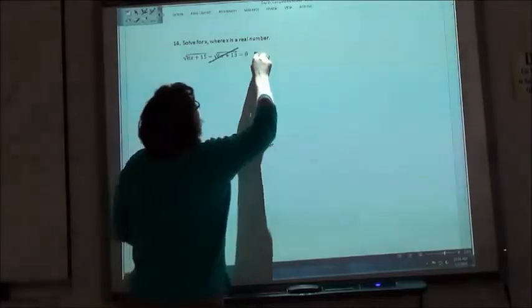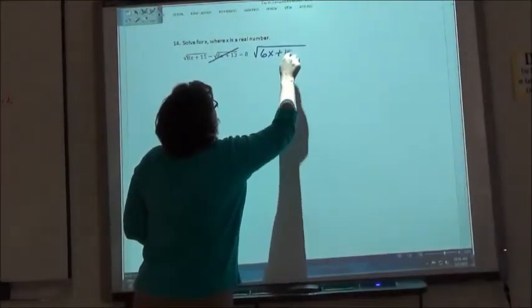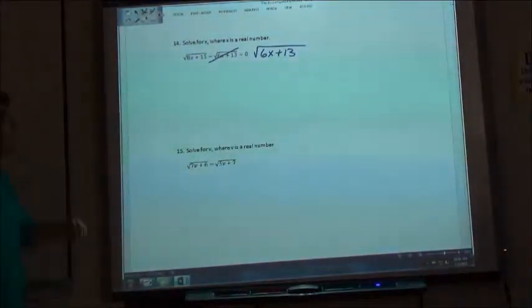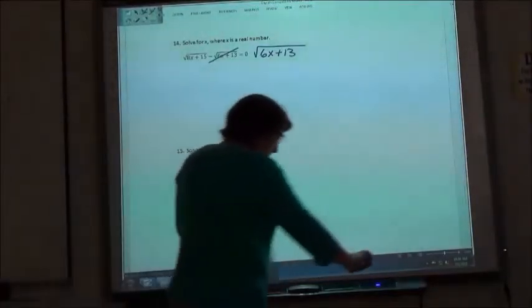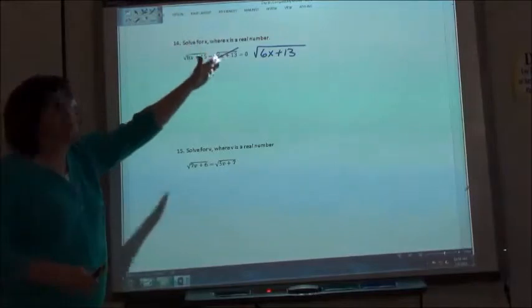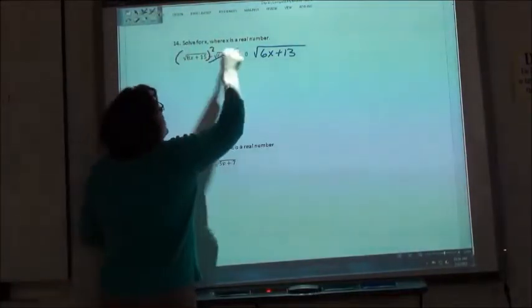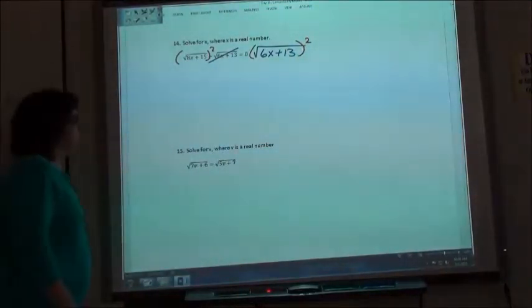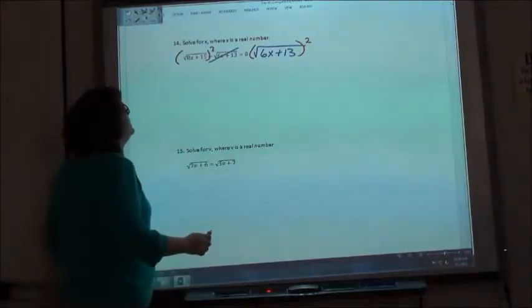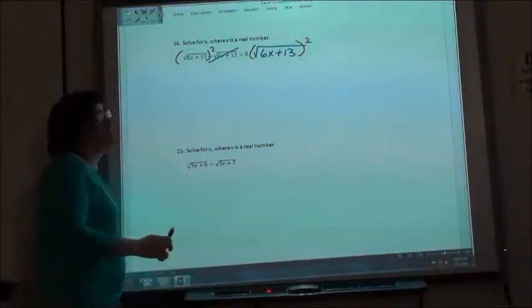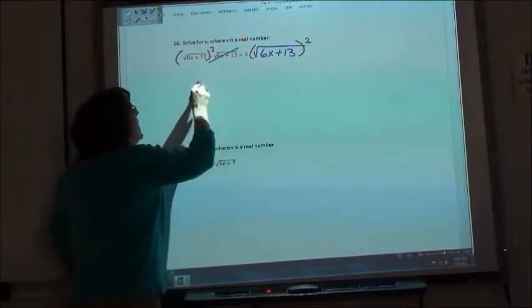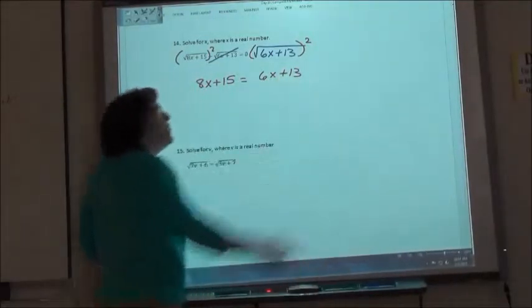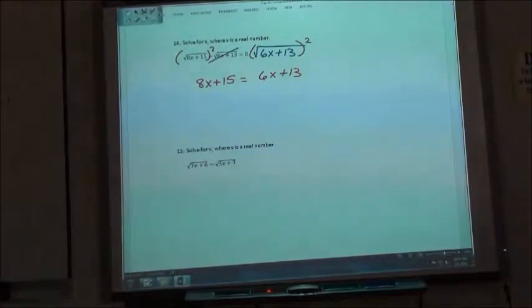So I'm going to make this the square root of 6x plus 13 over here. And since it's a minus it's going to make it a positive. And then it's going to look like the previous problems, right? So now we can get rid of our square roots. We're going to square both sides. And what would we get? We're going to get the 8x plus 15 equals the 6x plus 13, right? Because the squaring just got the square root out of our problem.